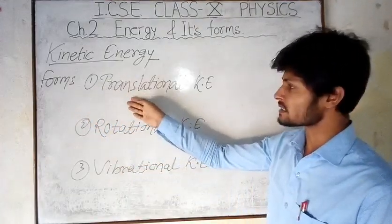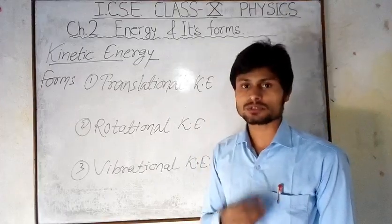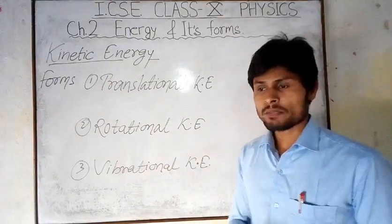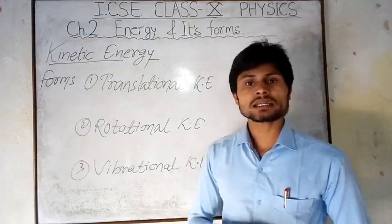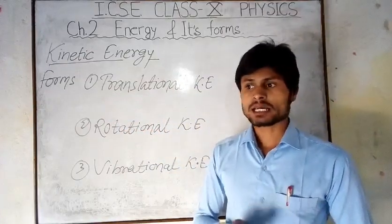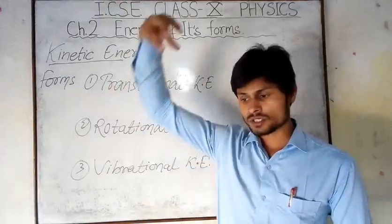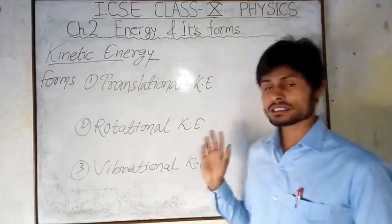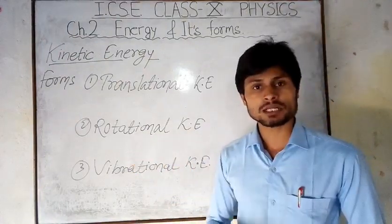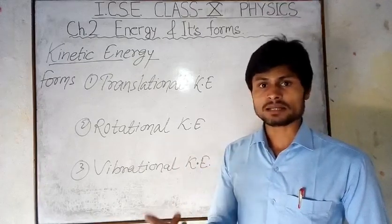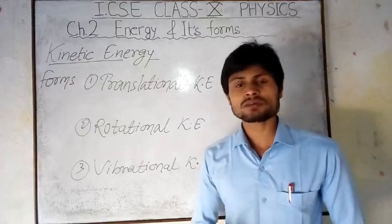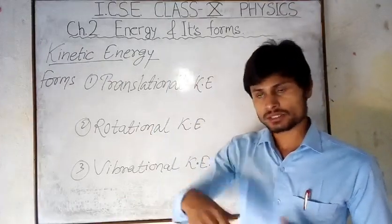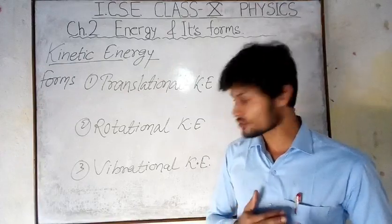These are the forms of kinetic energy. Kinetic energy is the energy due to the motion of the object, and motion is of different types. In translational motion — such as a car moving in a straight line or a body dropped from a height — the body has translational kinetic energy. In rotational motion, such as the earth rotating, the body has rotational kinetic energy. In vibrational motion — like a stretched rubber band vibrating — the body has vibrational kinetic energy.